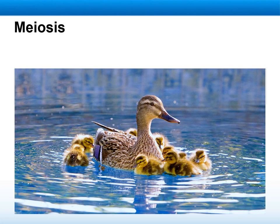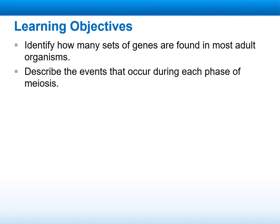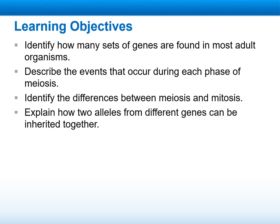Sperm and eggs are produced through the process of meiosis. As we learn about meiosis, we will identify how many sets of genes are found in most adult organisms. We'll describe the events that occur during each phase of meiosis, which takes place over several stages or phases. We will identify the differences between meiosis and mitosis, and explain how two alleles from different genes can be inherited together.